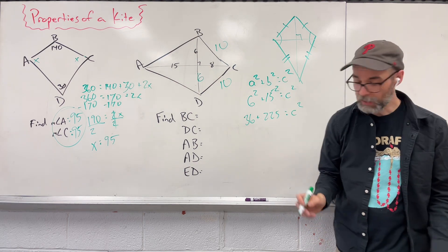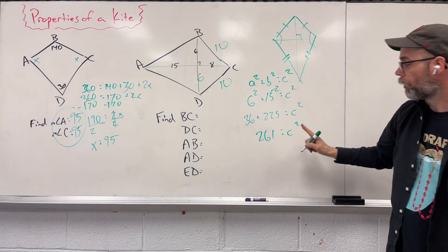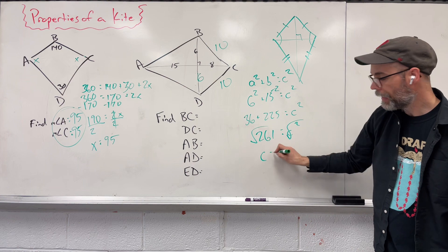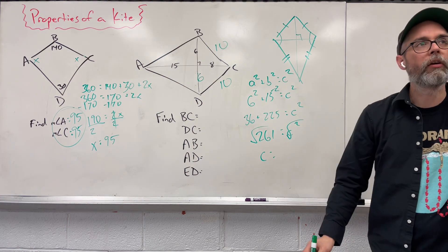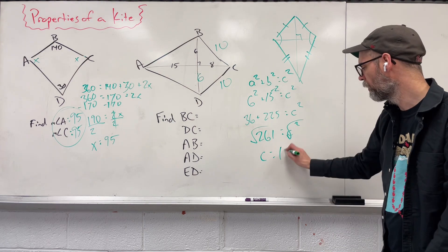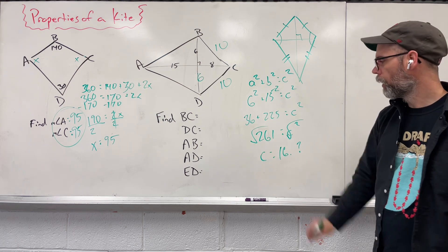When I put those two together, I get 261. In order to undo that exponent, we square root both sides. And C ends up equaling, wow, who cares? 261, it's going to be 16 point something. Whatever. Let's just leave it at the square root of 261.